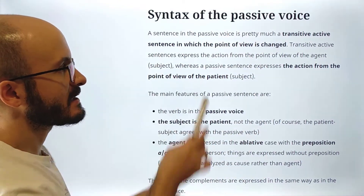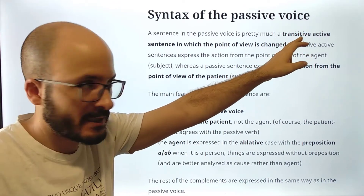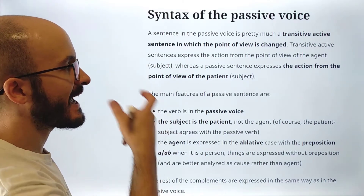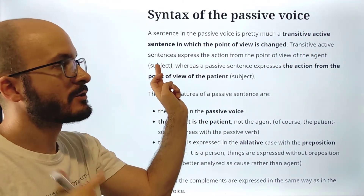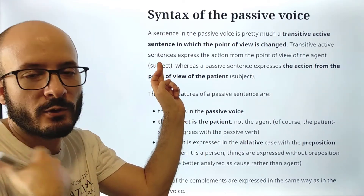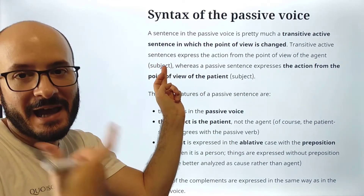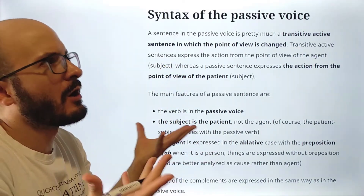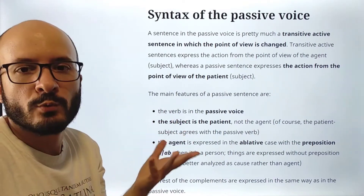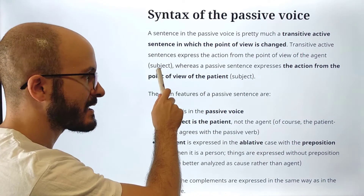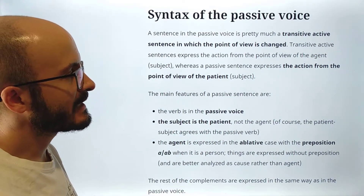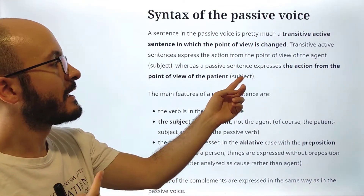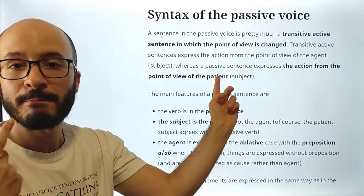Transitive active sentences — transitive means that it has a direct object. So transitive active sentences express the action from the point of view of the agent. The agent is the subject — the person or thing which does the action. This is a vague explanation, but we just need to understand what we are talking about. So the subject is the agent, whereas a passive sentence expresses the action from the point of view of the patient. In the passive voice, the subject is not the agent but the patient.